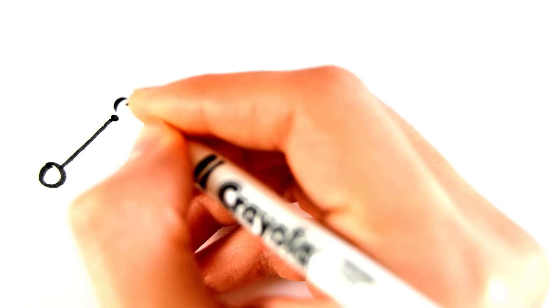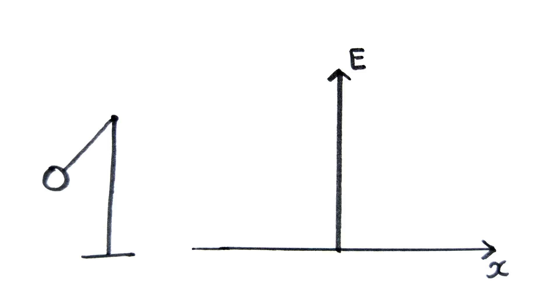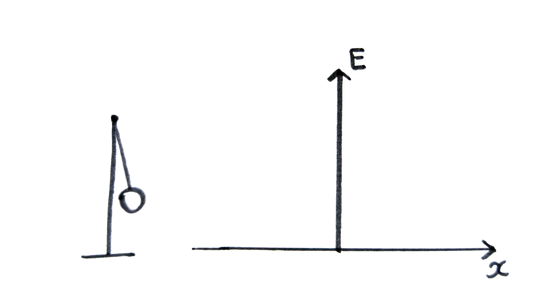When a pendulum is displaced from equilibrium, it gains gravitational potential energy. When the pendulum is released, the gravitational potential energy gets converted to kinetic energy and is entirely kinetic energy when the pendulum passes through the equilibrium position. The pendulum will only come to rest due to air resistance, but a perfect theoretical pendulum would go on forever.